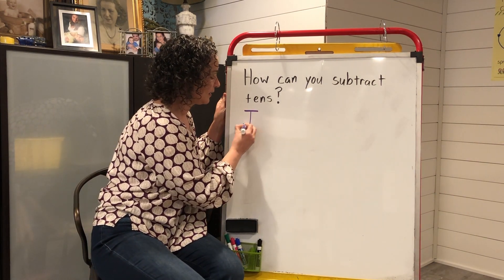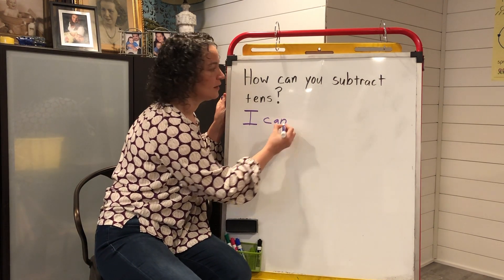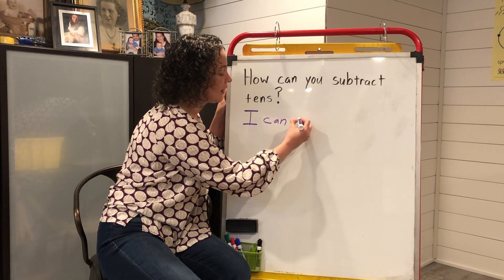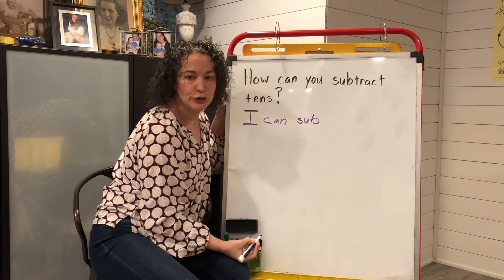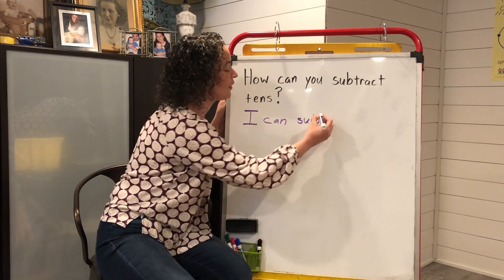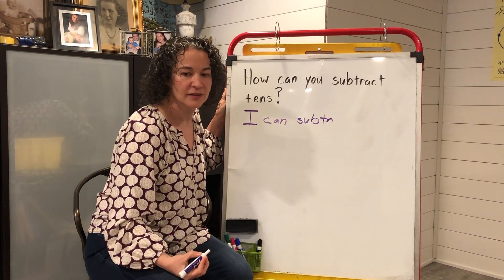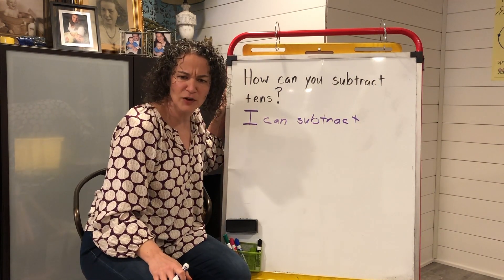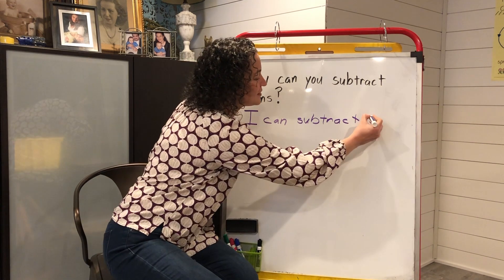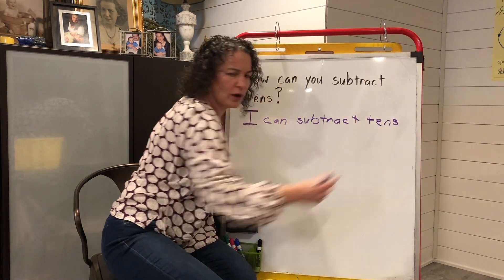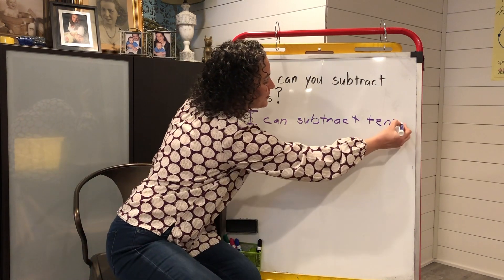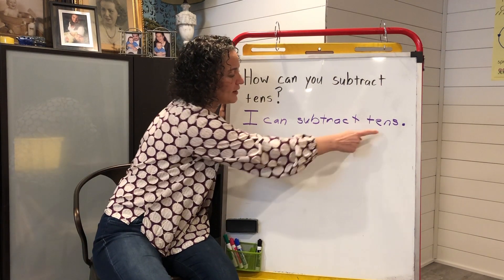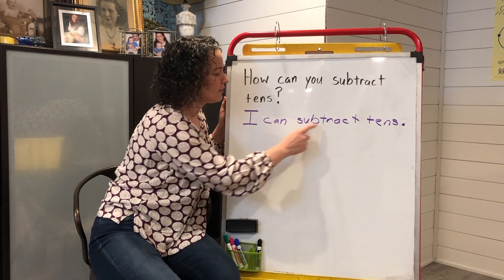I can — let me hear you — C-A-N. Subtract. We can totally sound this word out. S-U-B, T-R, A-C-T. I can subtract tens. How do we spell tens? T-E-N-S. And what goes at the end of my sentence? We need a period. I can subtract tens. Read it with me again: I can subtract tens.